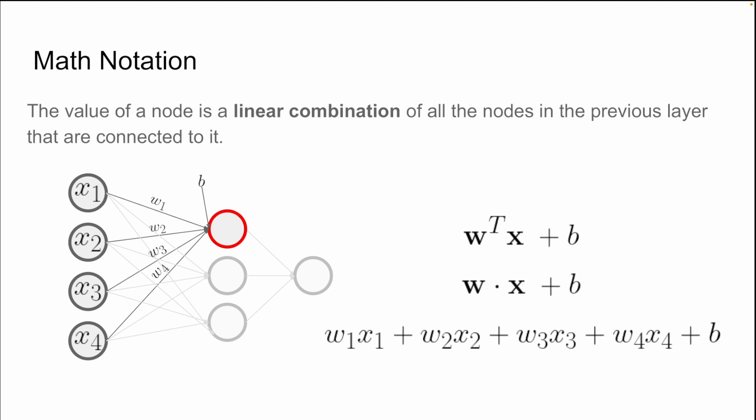To give an example of this, let's look at this red node. This red node has four inputs coming from the previous layer, x1, x2, x3, and x4. To get the value of the red node, we're going to have to take each of these input values, multiply them by their respective weights, and add a bias. Basically, you can see what's happening using this formula here at the bottom. These formulas that I introduced before are basically just shorthand for what's happening here.